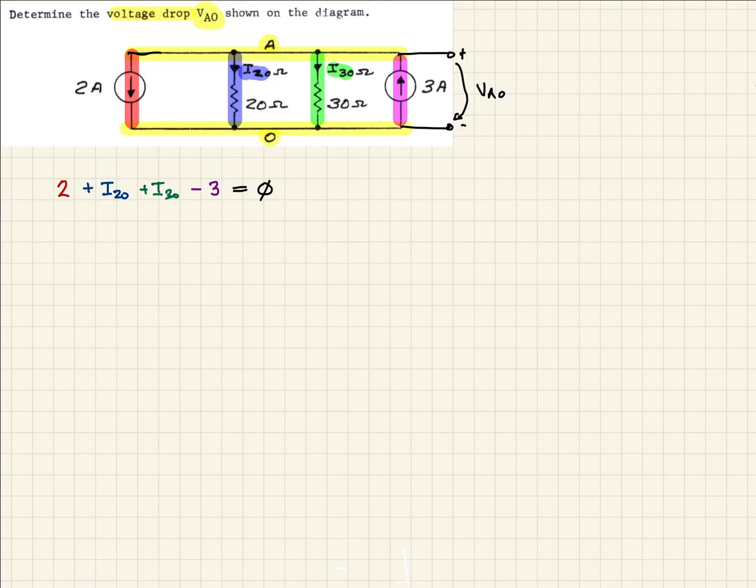Now we need to get a little bit creative. We need to recall from Ohm's Law, V equals I-R. But we can rewrite I, solve for I, and say that I is equal to V over R. That's what we want to utilize for this branch and this branch, because we have resistors in those branches that we can use for our R value. And the V is the VAO, what we're looking for.